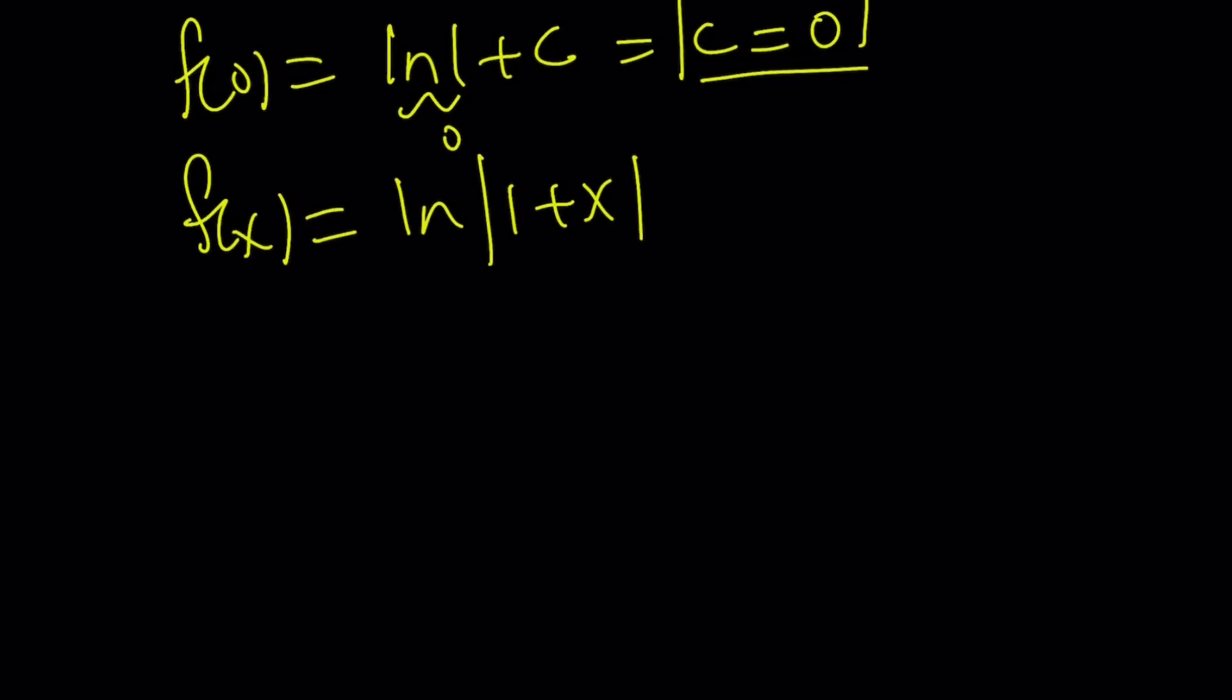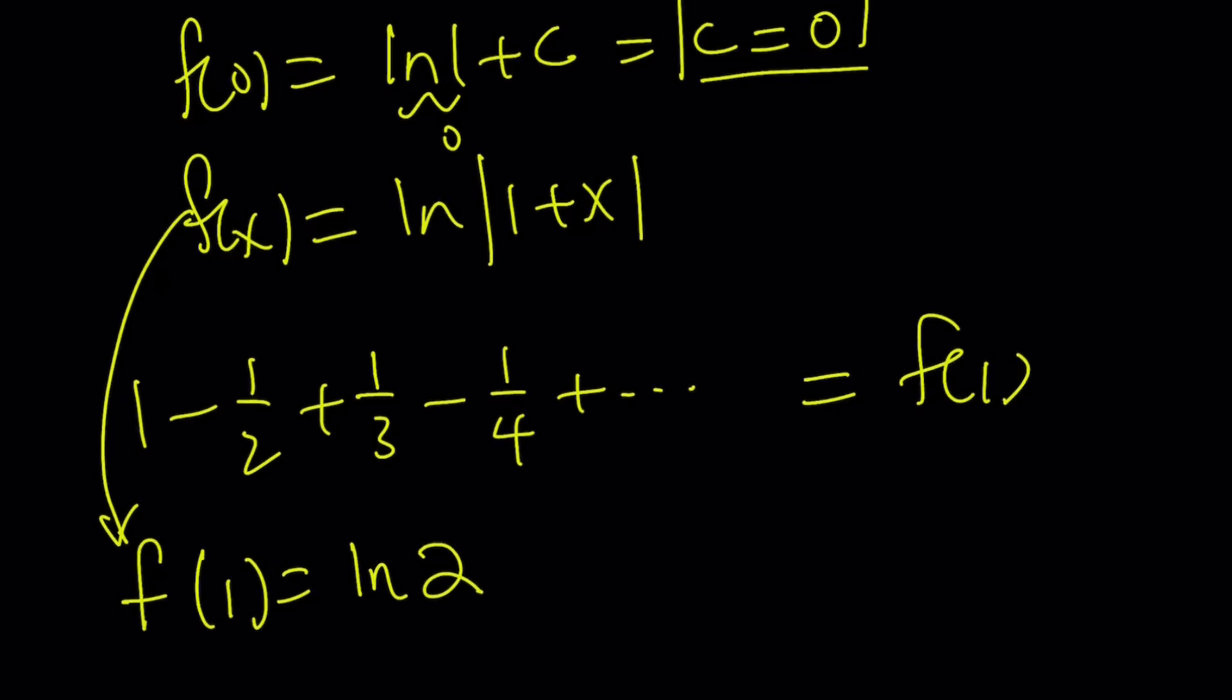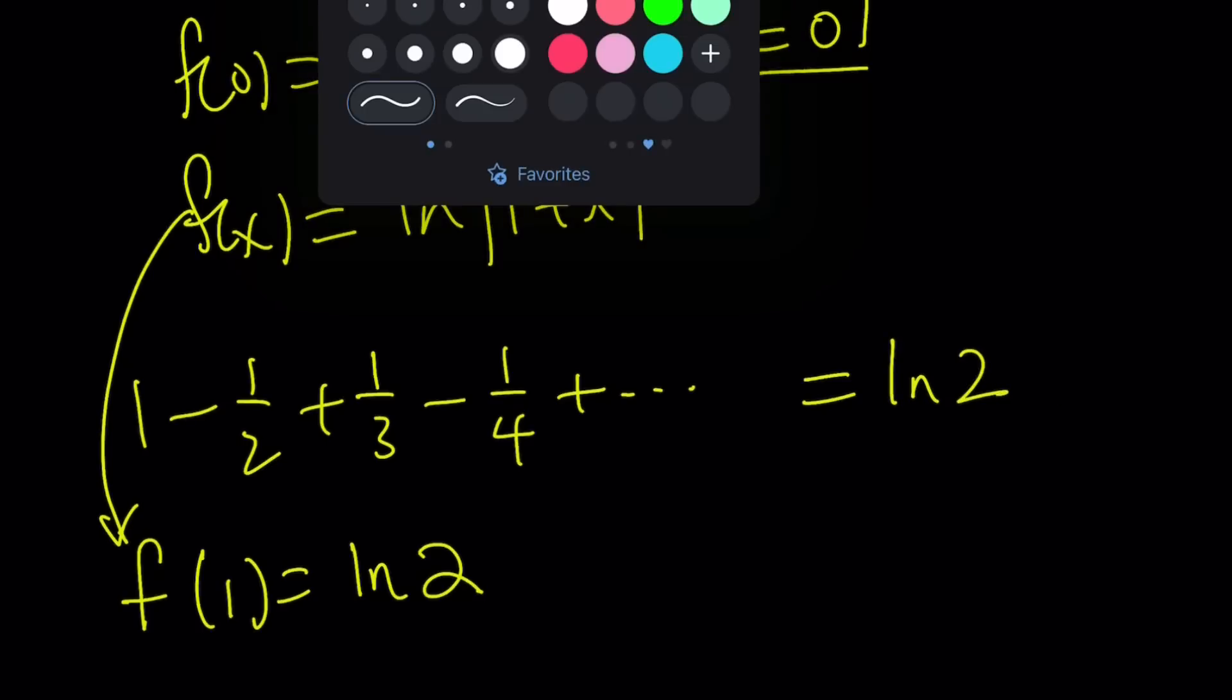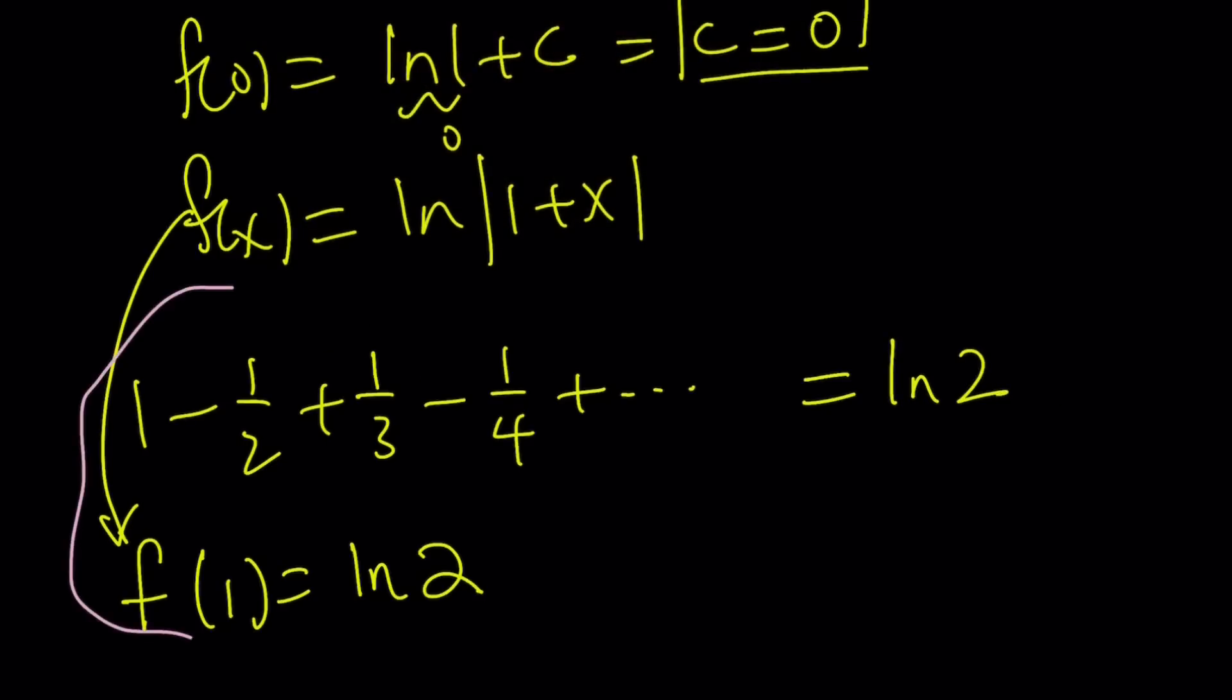Now, remember, to evaluate our expression, I was supposed to replace x with 1 in f(x). In other words, this is equal to f(1), and f(1) from here is ln(1 plus 1), which is ln 2. So this sum is actually equal to, or it converges to, ln 2. And this brings us to the end of this video.